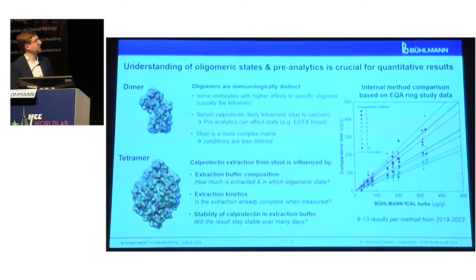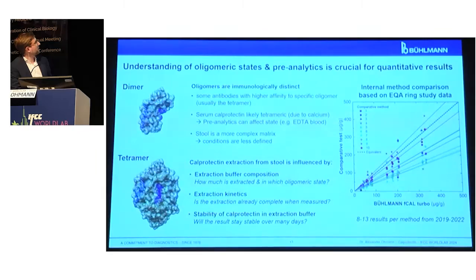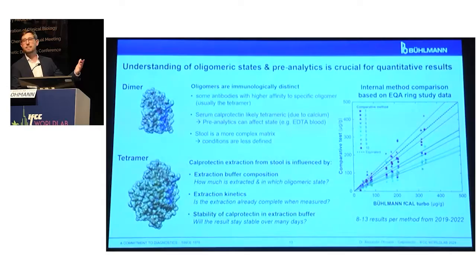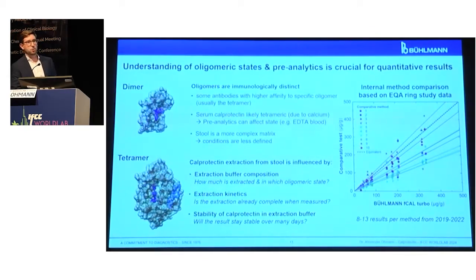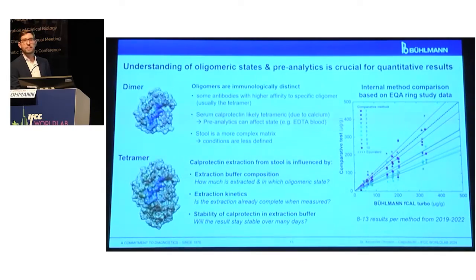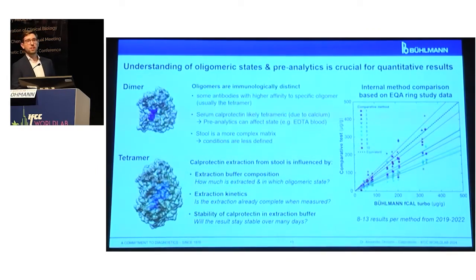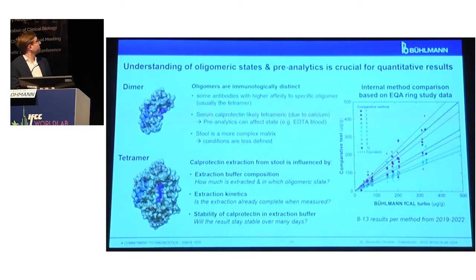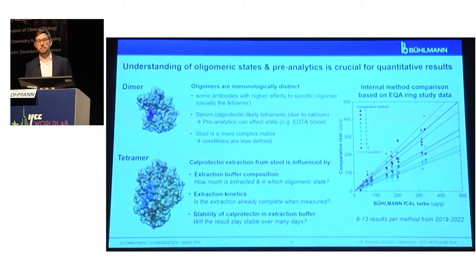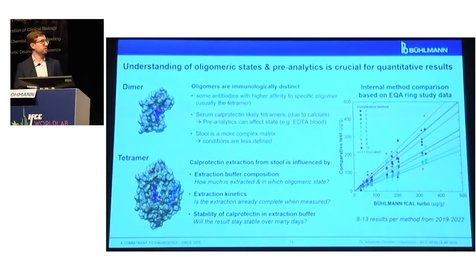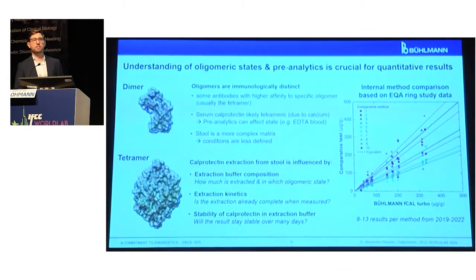We conducted a method comparison based on an external quality assessment ring study, comparing ten different tests on the market — including ELISA, chemiluminescence, and turbidimetric assays — against our turbidimetric Bühlmann F-Cal Turbo. The quantitative results vary quite distinctly, by a factor of about three between the lowest and highest results. We believe this comes down to the oligomeric state being recognized differently across different suppliers, as well as differences in pre-analytics and how the stool is treated. At Bühlmann we are very interested in harmonizing these results so they yield the same quantitative values across multiple suppliers.